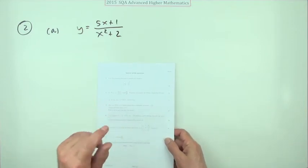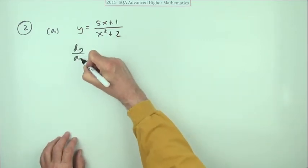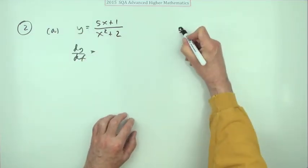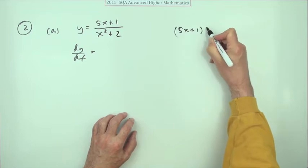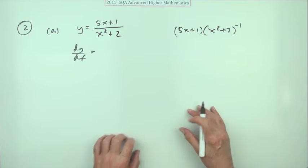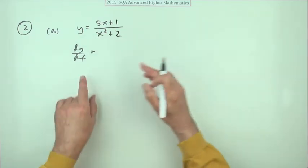Well that's obviously going to be the quotient rule. There's no point separating that into 5x plus 1 times x squared plus 2 to the negative one and then using the product rule and getting two fractions which will then have to be combined together. Not as much simpler, just using the quotient rule.